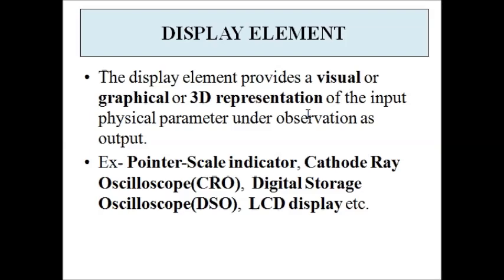Next we have the display element. The physical parameter which we want to measure has to be displayed so we can know its value. The display element provides a visual, graphical, or three-dimensional representation of the physical parameter under measurement. This display element can be of various types: it can be a pointer-to-scale indicator with a needle pointer moving over a graduated or calibrated scale, a cathode ray oscilloscope, a digital storage oscilloscope, or an LCD display which gives digital output.